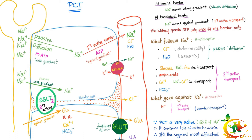Chloride moves through the paracellular route, and this is passive diffusion — not active. In brief, your kidney follows grandma's way of handling money: spend money only once, at one border, in the sodium-potassium ATPase. Everything else just follows sodium.